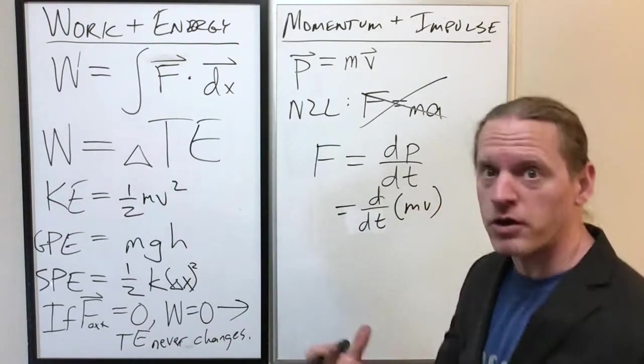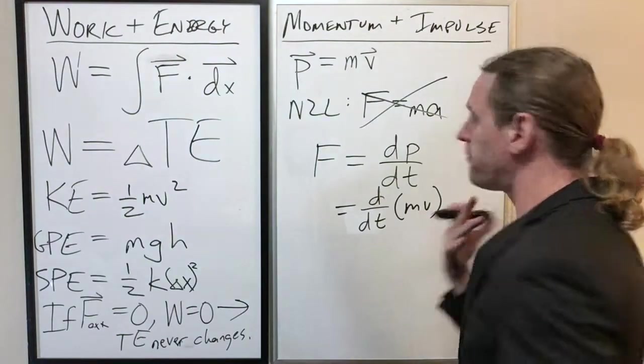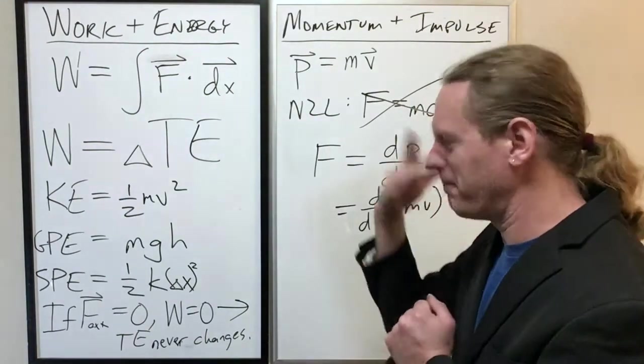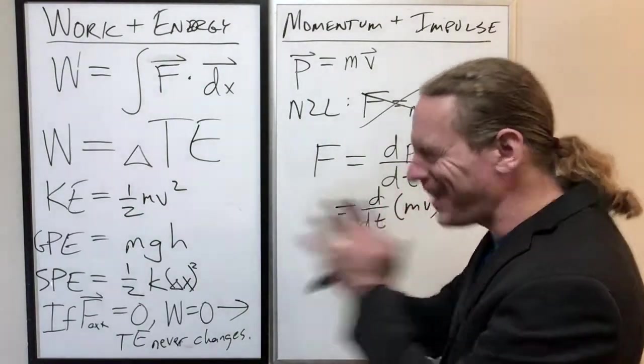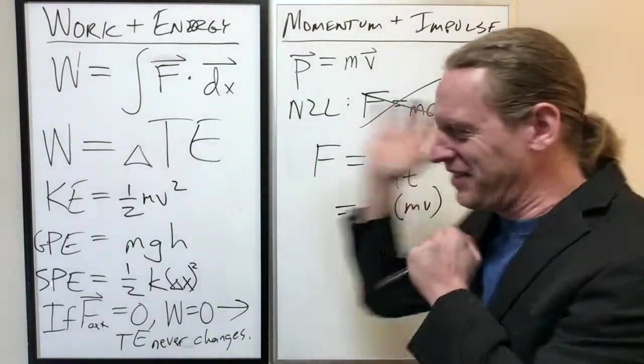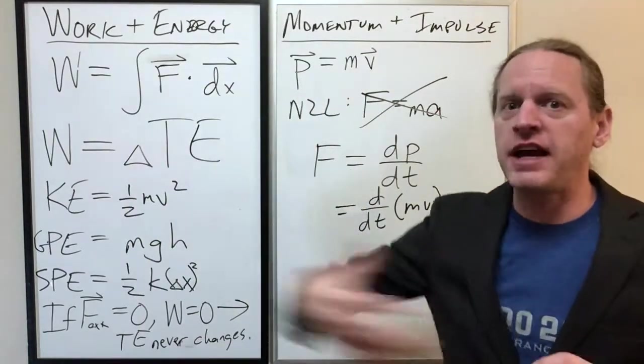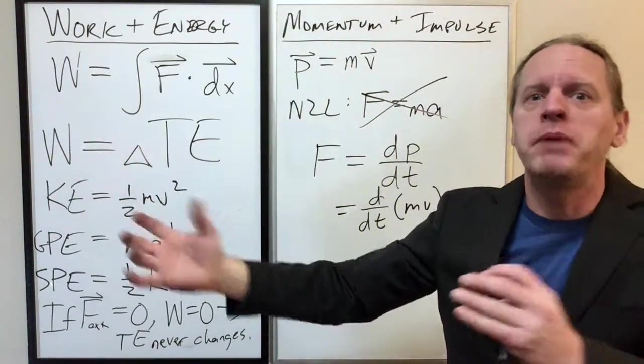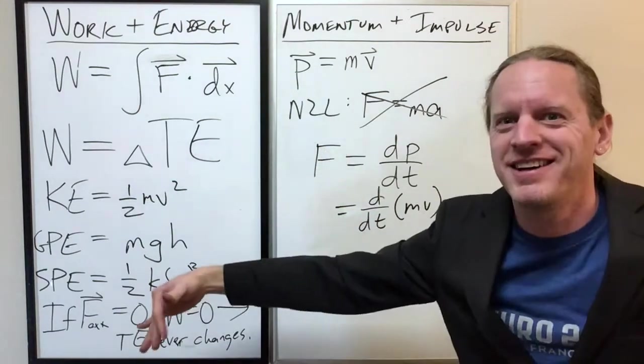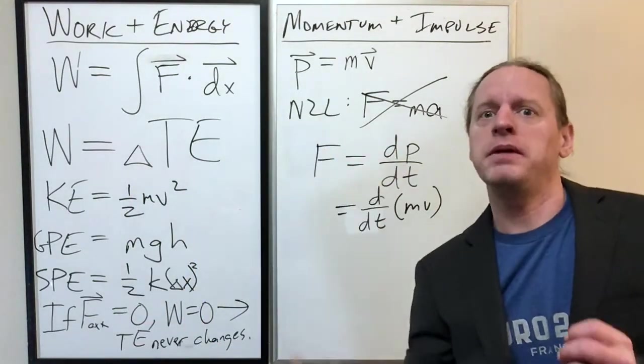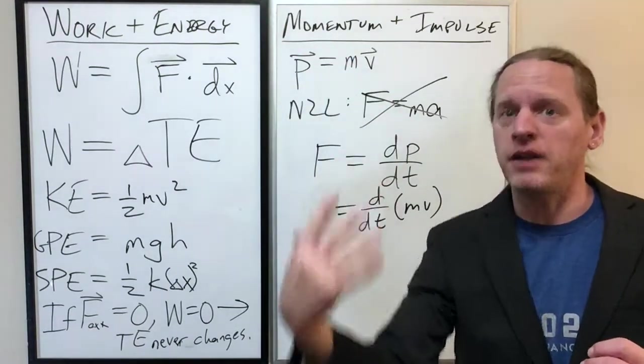But in the more general situation, if for example, if you're a train that you're going down the track and you're carrying sand from point A to point B, but you have a slow leak of your sand. Like as you move forward, gradually your mass is decreasing because you're losing some of your payload as you move forwards.